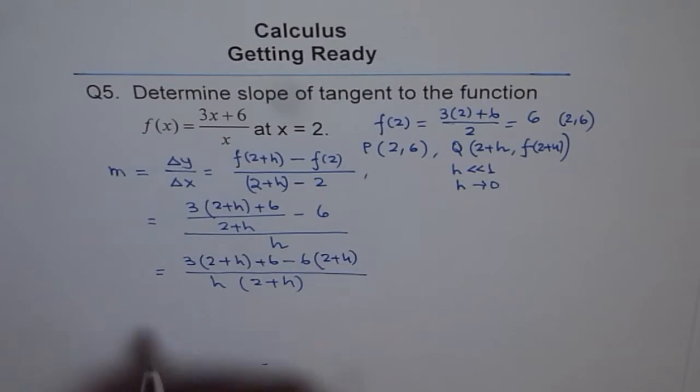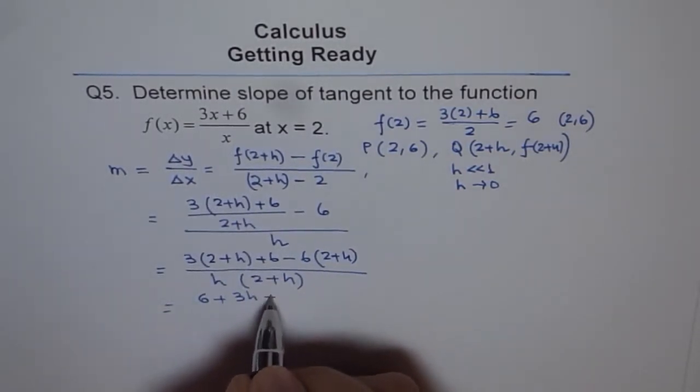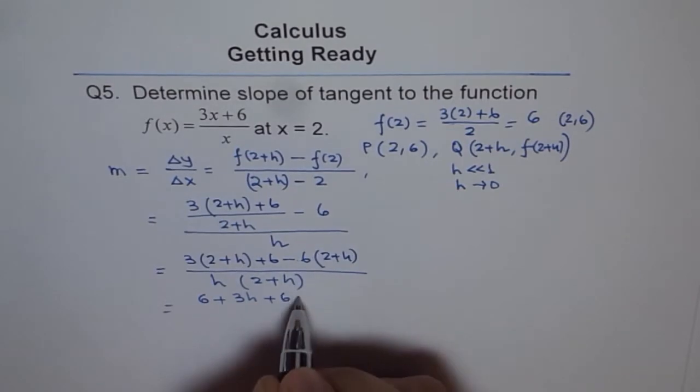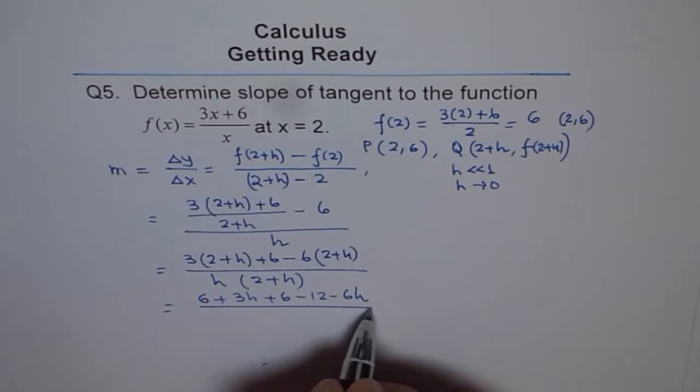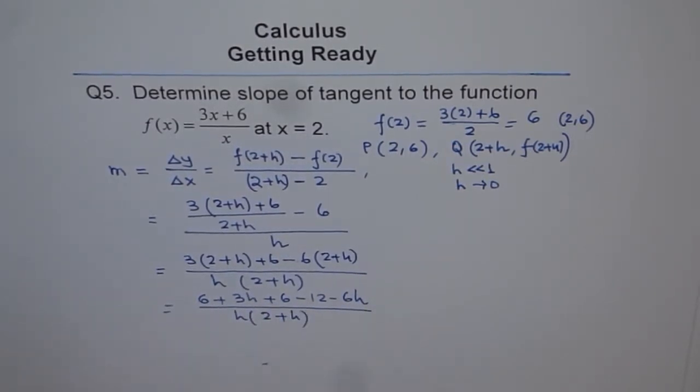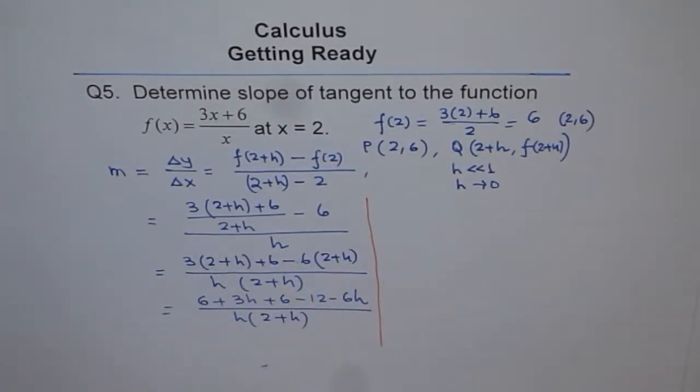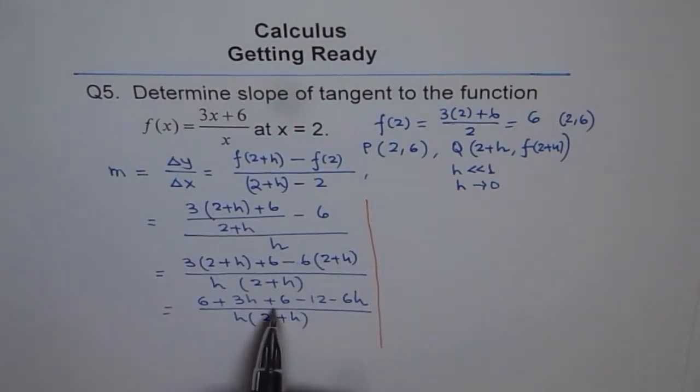Now we can expand and simplify. 3 times 2 is 6, let me write: 6 + 3h + 6 - 12 - 6h, divided by h(2 + h). Let us take it to the right side and simplify.